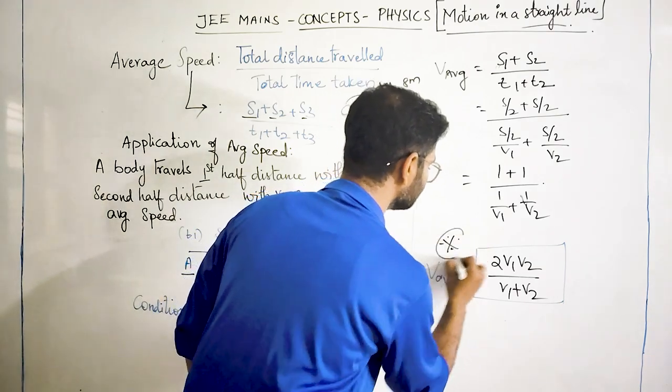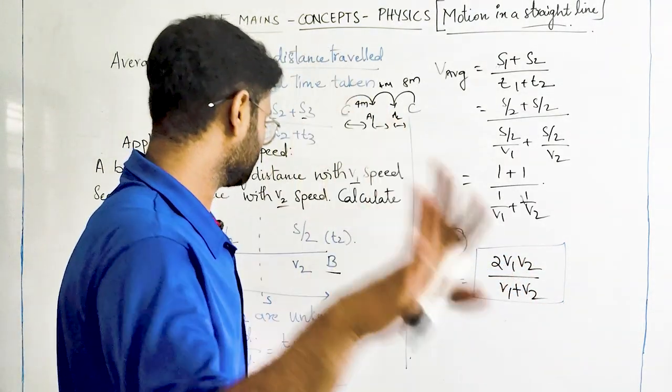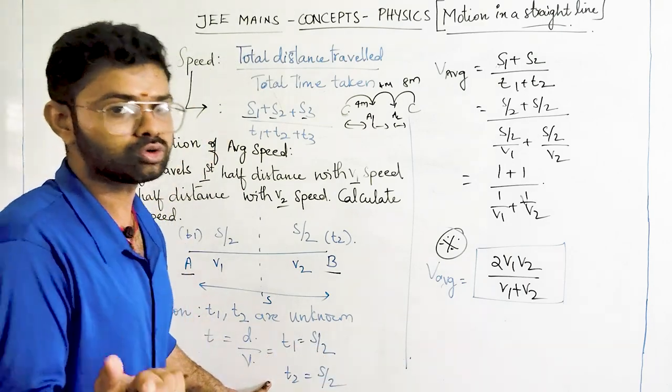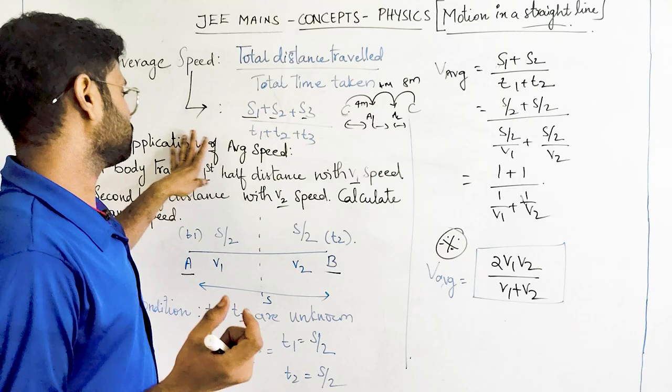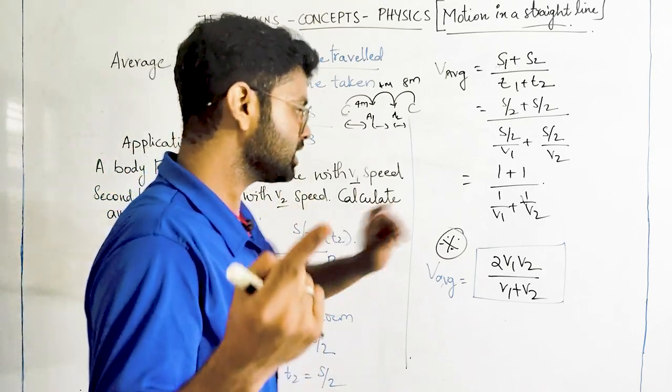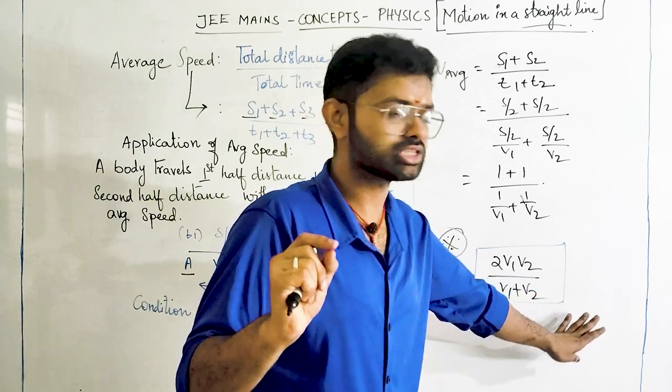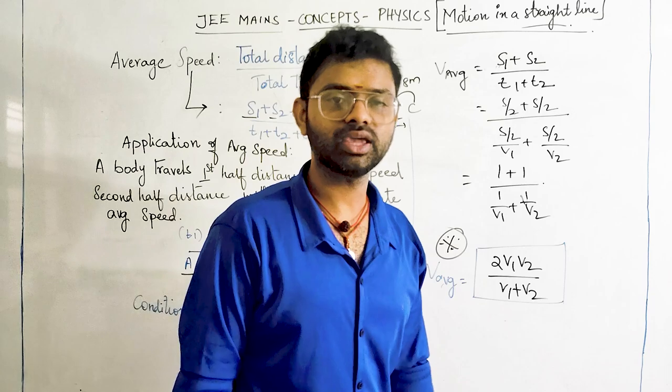So this is an important very basic formula and this formula we will use when time is unknown and velocity is given and distance is also given. If these parameters are given in the question directly you can go and solve or apply this formula instead of doing all these steps. Thank you.